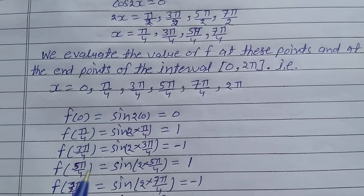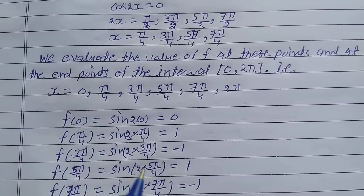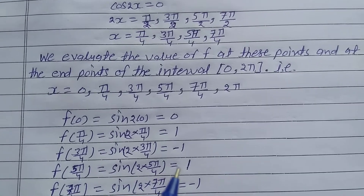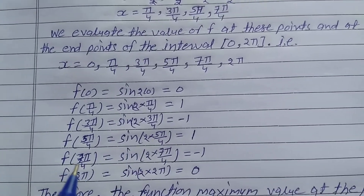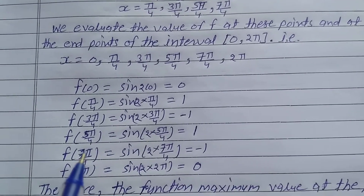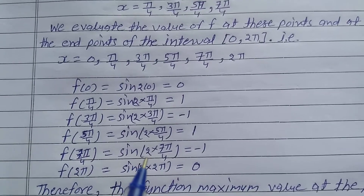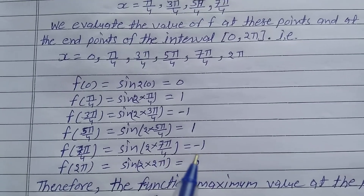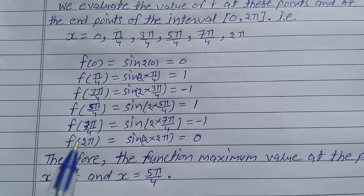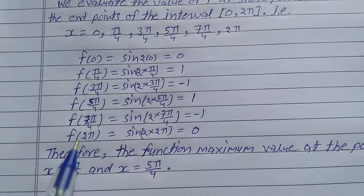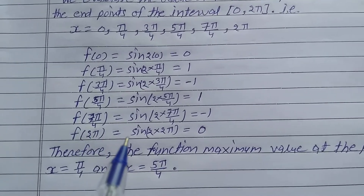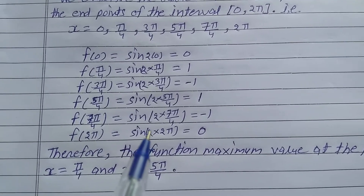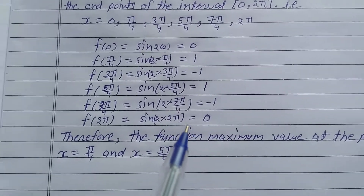f(5π/4) = sine(2 × 5π/4) = 1. f(7π/4) = sine(2 × 7π/4) = −1. f(2π) = sine(2 × 2π) = sine(4π) = 0.